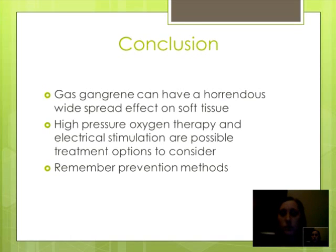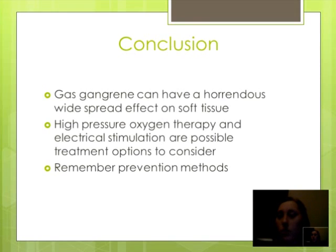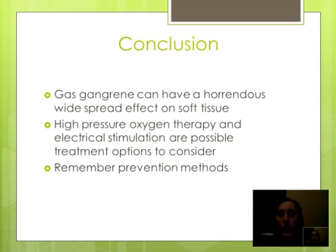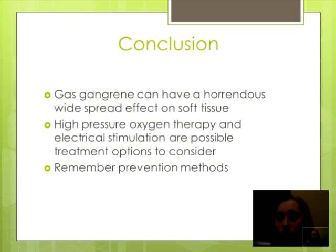With proper prevention methods during wound care after extensive soft tissue damage, there is a great chance that you can reduce the formation of gas gangrene. As you can see, gas gangrene has a horrendous widespread effect on soft tissue and spreads rapidly. Gas gangrene can be treated with amputation, high pressure oxygen therapy, wound care, and electrical stimulation. Next time you hear about gas gangrene, you will now have an idea about the prognosis, pathology, as well as possible treatment options for this disease. Thank you.